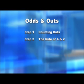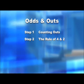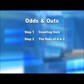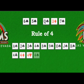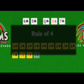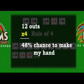Step two: the rule of four and two. After I figure out how many outs I have, I use the rule of four and two to determine how often I'll make a winning hand. Starting with the rule of four — after the flop, I multiply my number of outs by four to determine my chances of making a winning hand. In this case, I have twelve outs. Twelve times four is forty-eight, so I have about a forty-eight percent chance of improving my hand by the river.